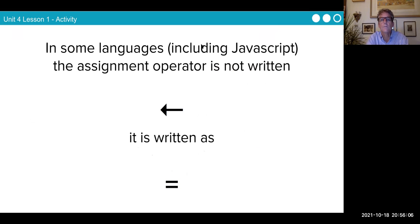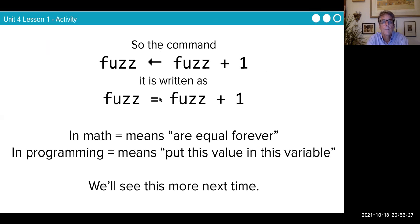In some languages, including JavaScript, the assignment operator is not written as an arrow. It is written as the equal sign. That is the assignment operator. The one that says this gets this value. So the command 'fuzz gets fuzz plus one', it can also be written as 'fuzz equals fuzz plus one'. Now, in math, equals means are forever equal. In programming, equals means put this value in this variable. The variable fuzz gets that value. We'll see this more next time.